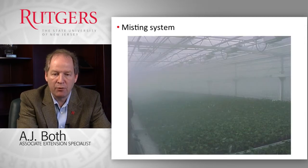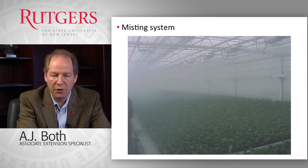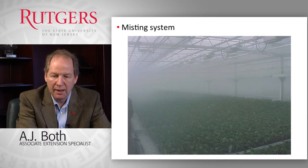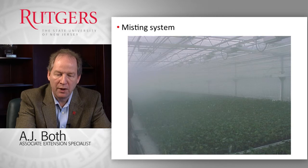Here's an example of what a misting system looks like — a pretty foggy environment inside a greenhouse. Mostly used for providing a very moist environment for rooting cuttings, but it could also be used for evaporative cooling purposes.